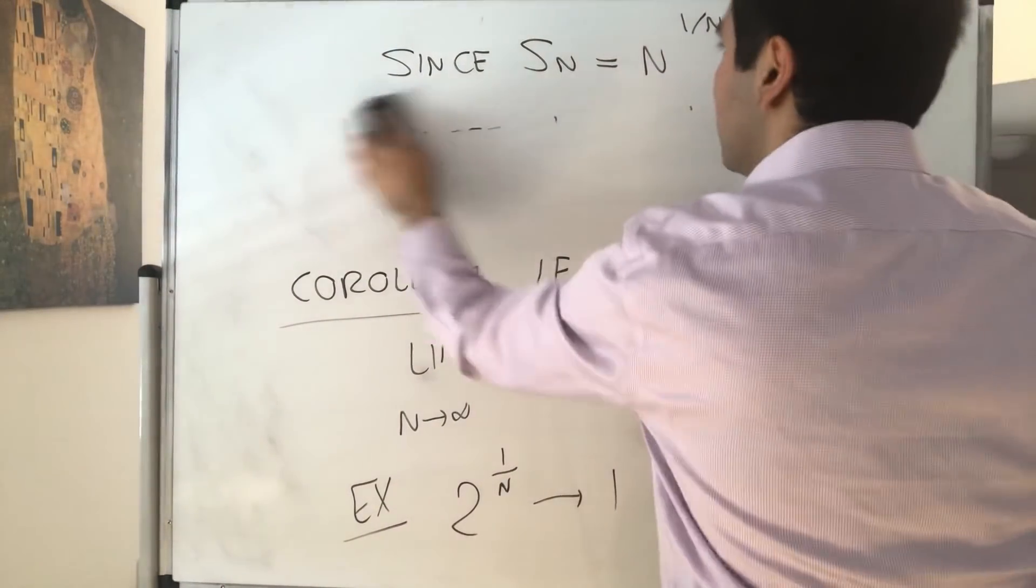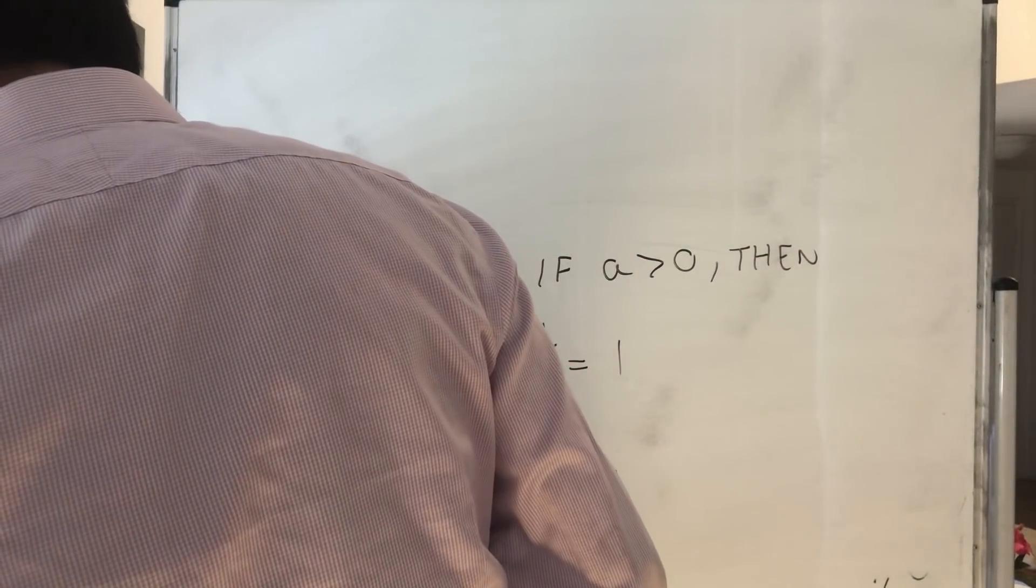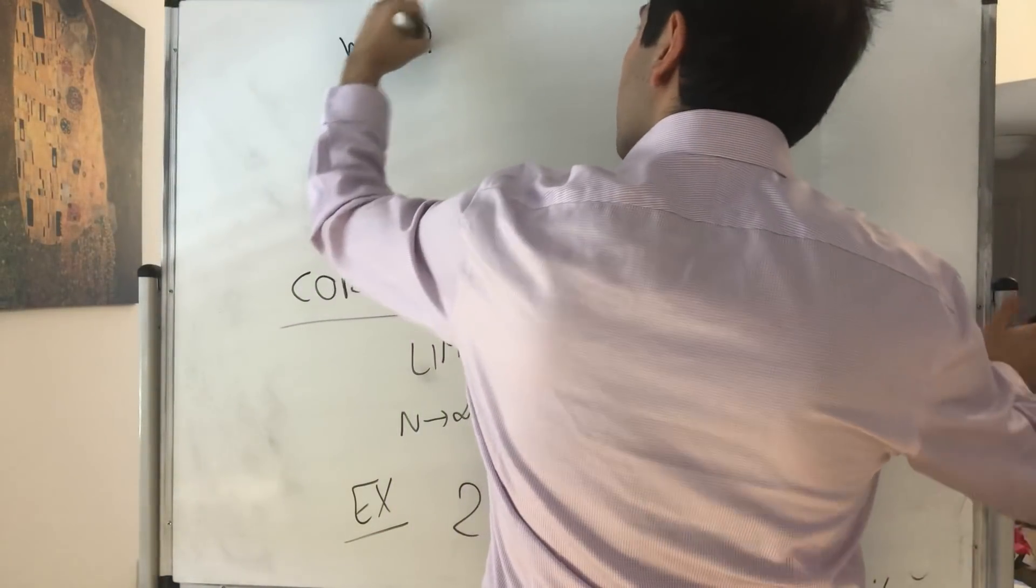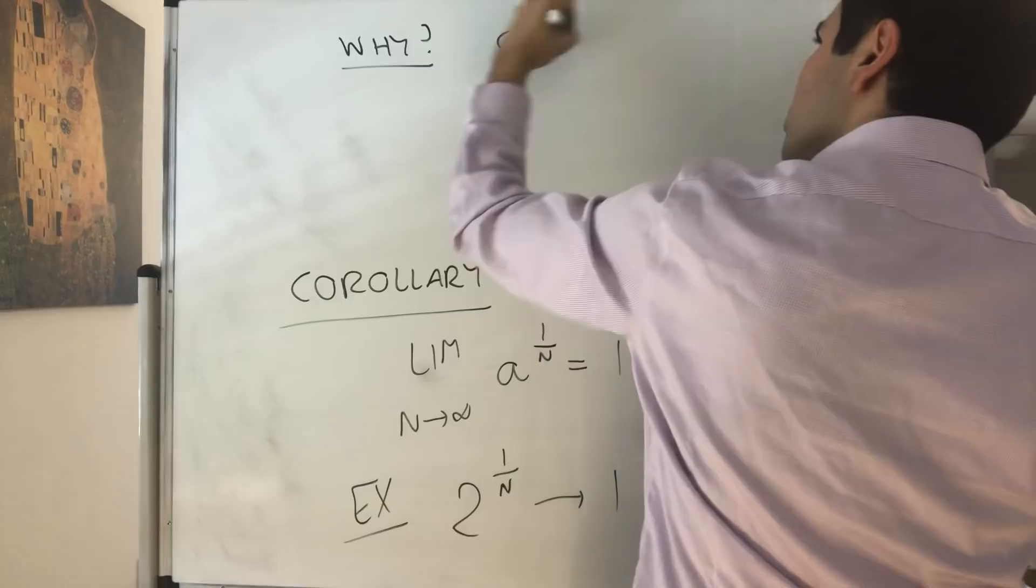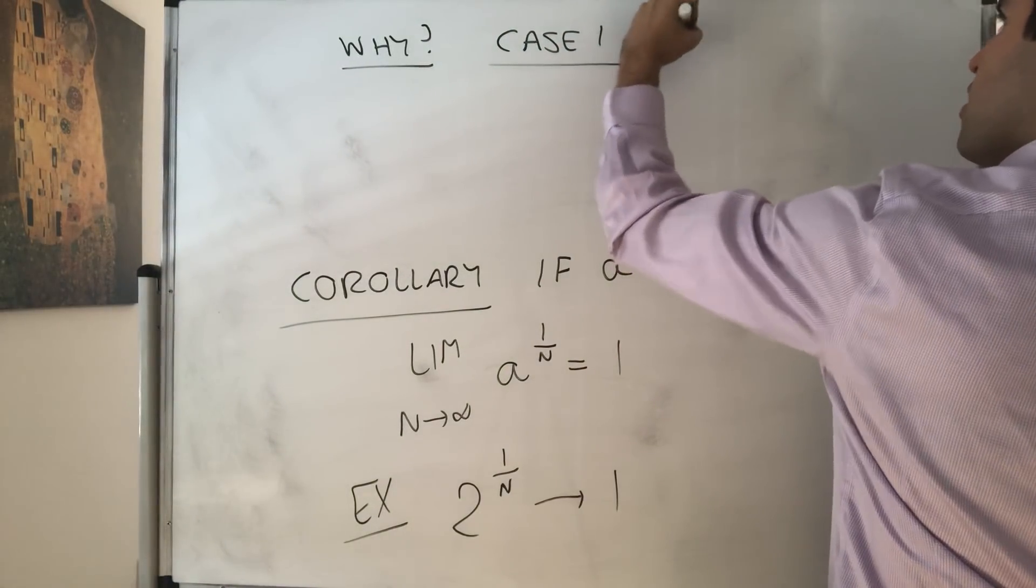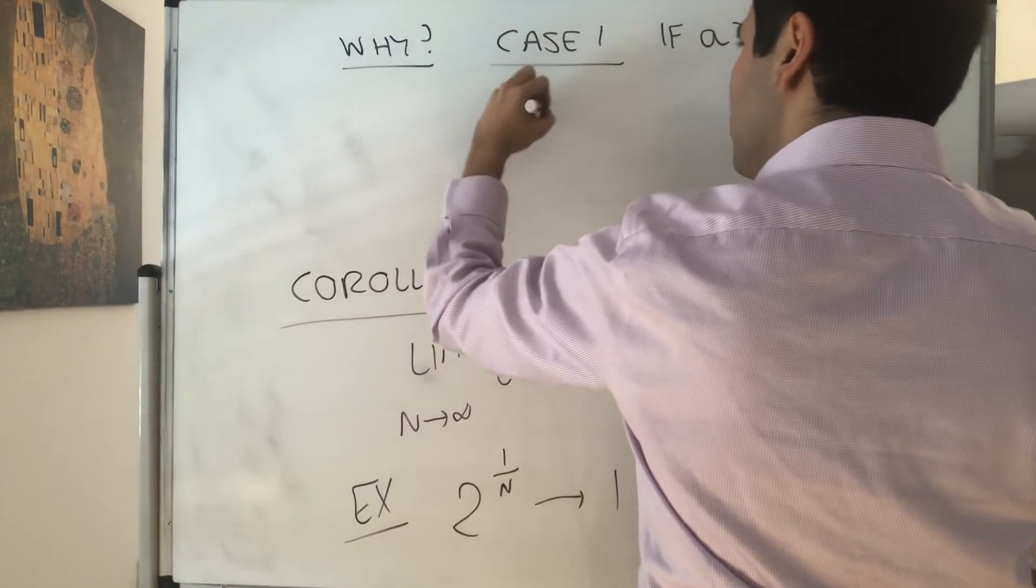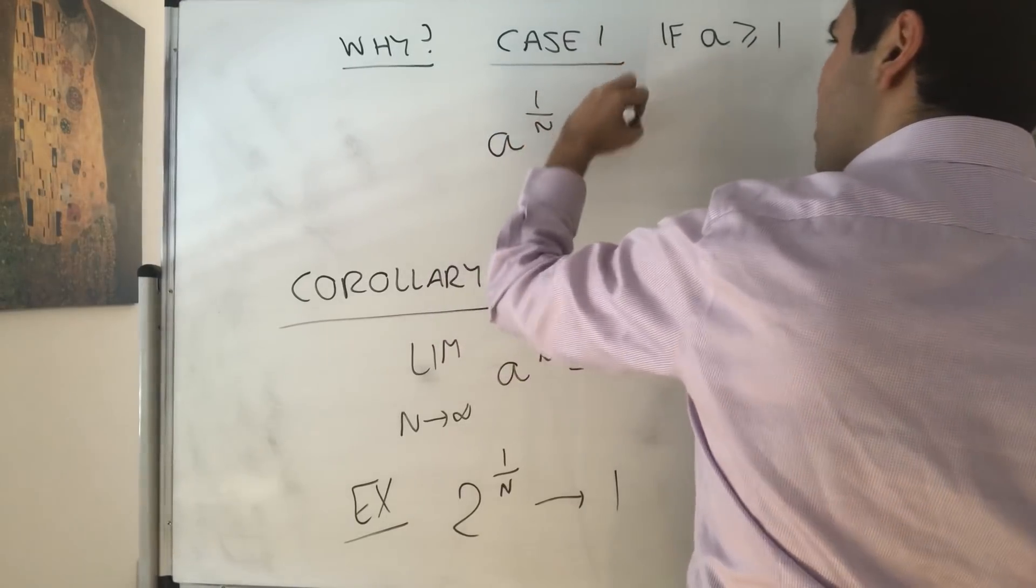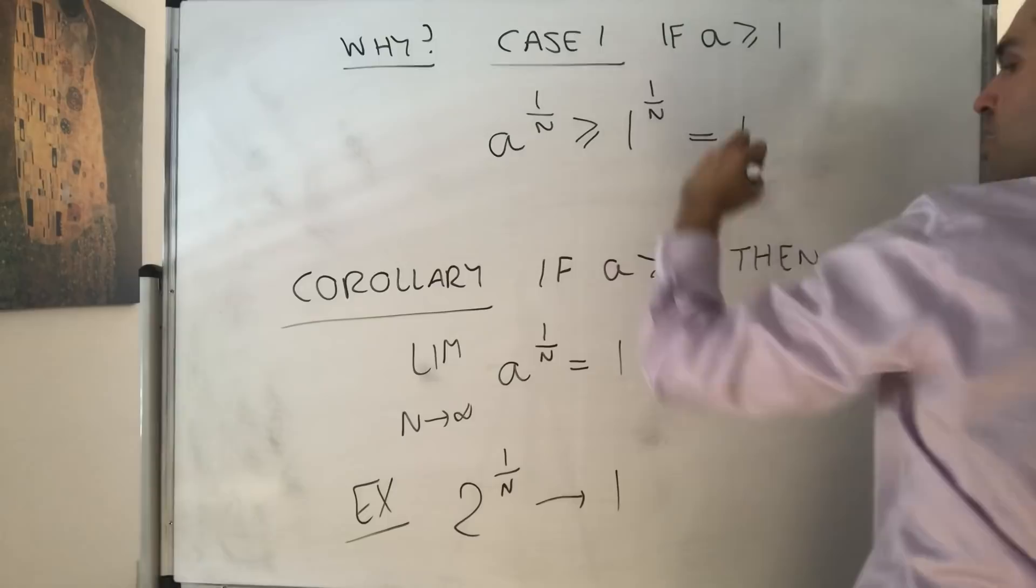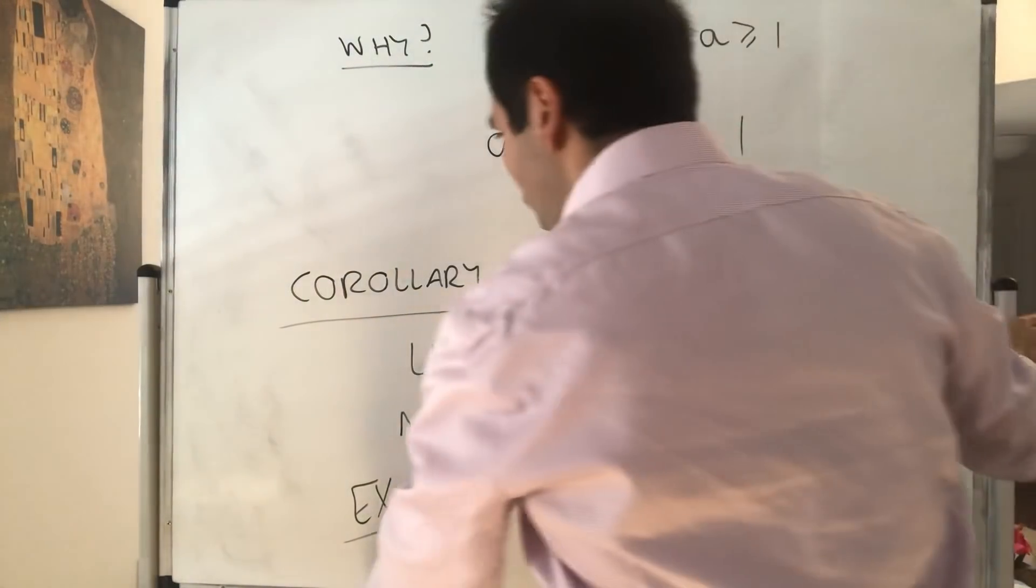Well, I believe you just do it by cases, first of all. So why? Well, so either a is greater or equal to 1 or it's less than 1. So if a is greater or equal to 1, then what we get is a to the 1 over n is greater or equal to 1 to the 1 over n, and that becomes 1. So a to the n is greater or equal to 1, but also...